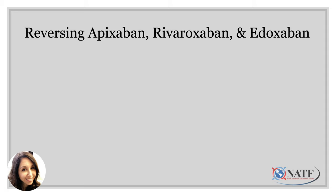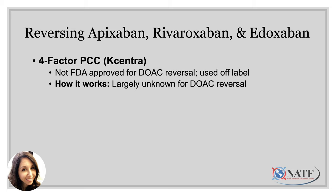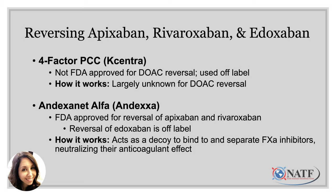Now we will discuss the reversal of factor Xa inhibitors — apixaban, rivaroxaban, and edoxaban. As it stands right now, there are two options. The first is four-factor PCC, otherwise known as K-Centra. It's important to note that this is not FDA-approved for DOAC reversal — it is a nonspecific reversal agent, and its mechanism for reversing a DOAC-related bleed is largely unknown. It is significantly cheaper than the alternative, andexanet alfa. Andexanet is FDA-approved for reversal of apixaban and rivaroxaban; use for edoxaban reversal is actually off-label because there were so few patients on edoxaban in that trial.